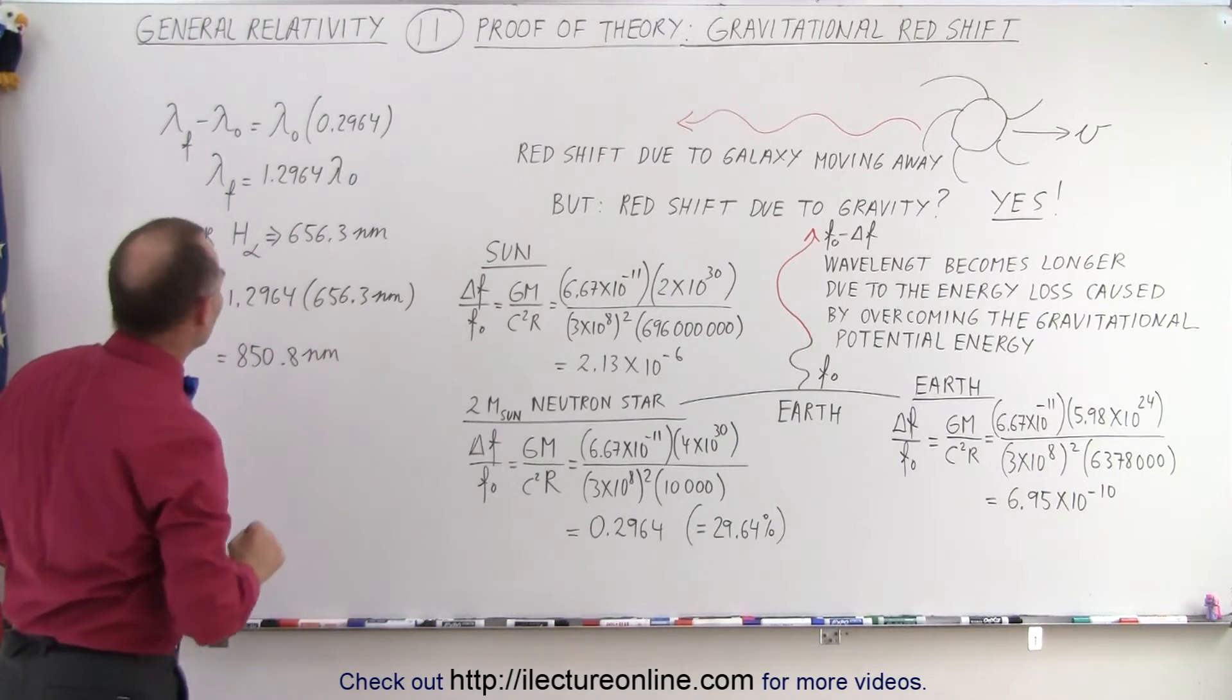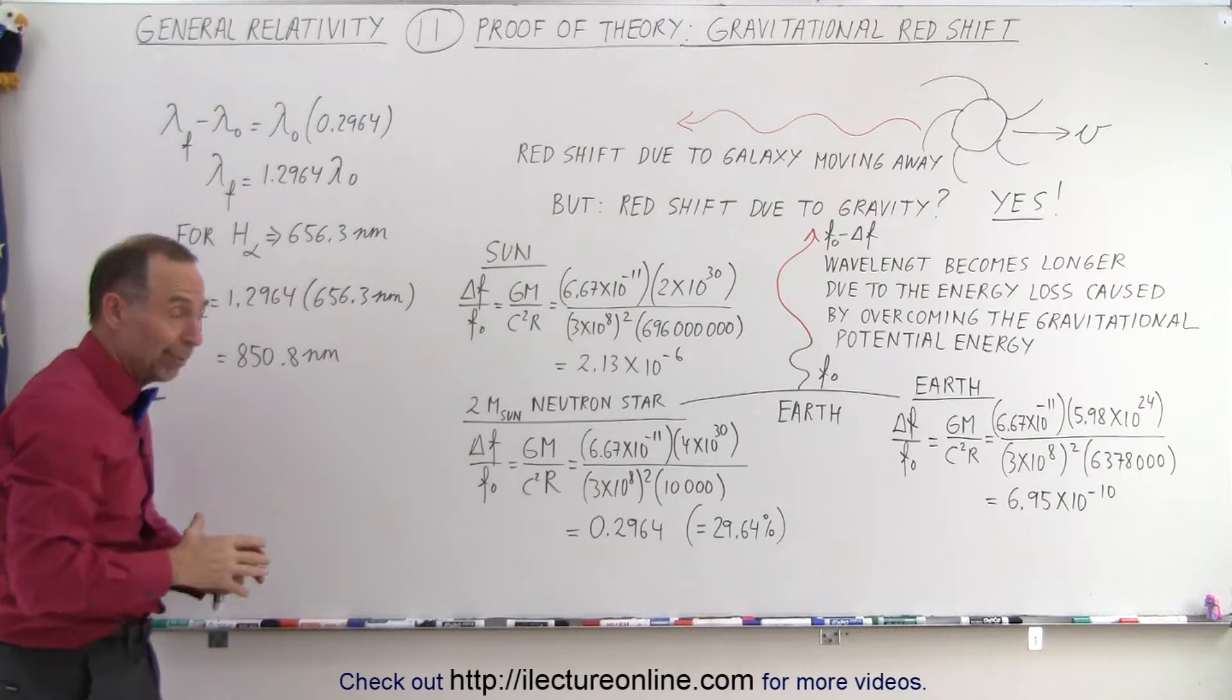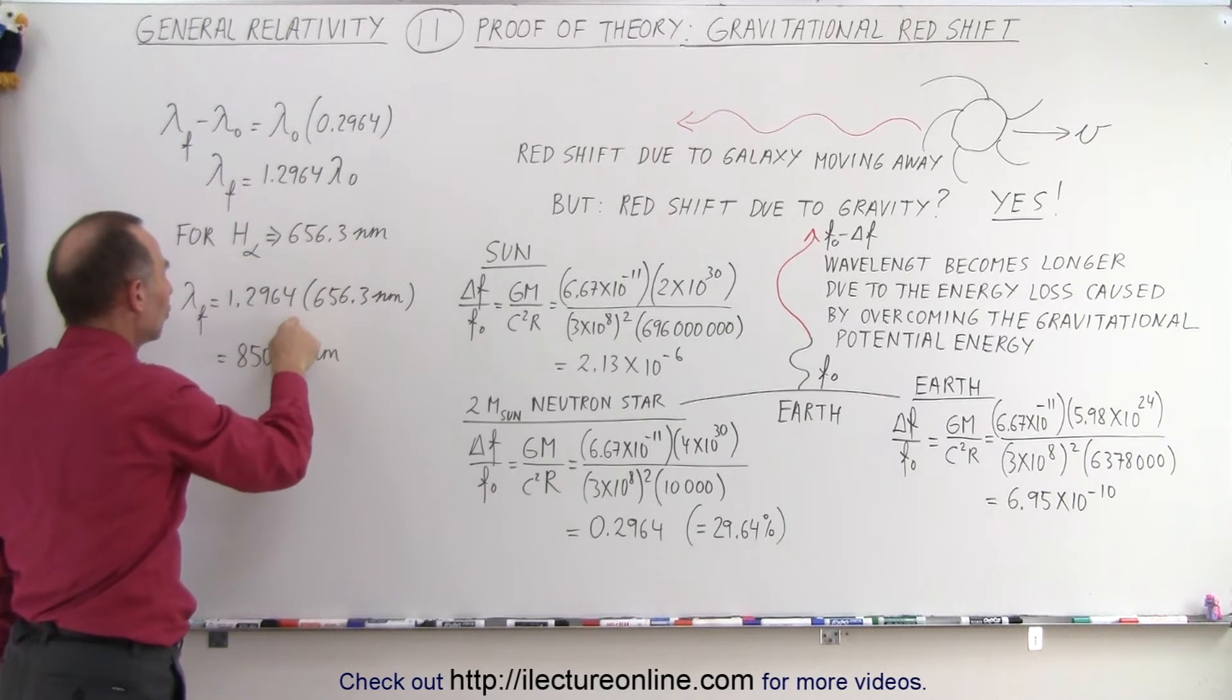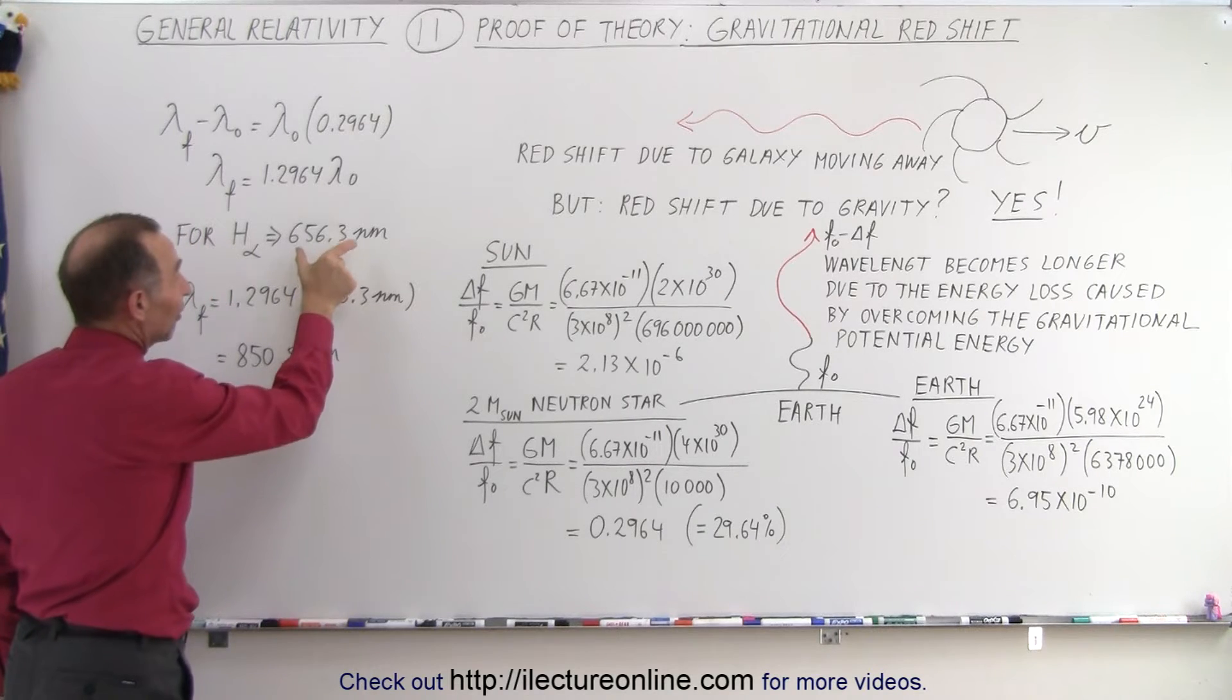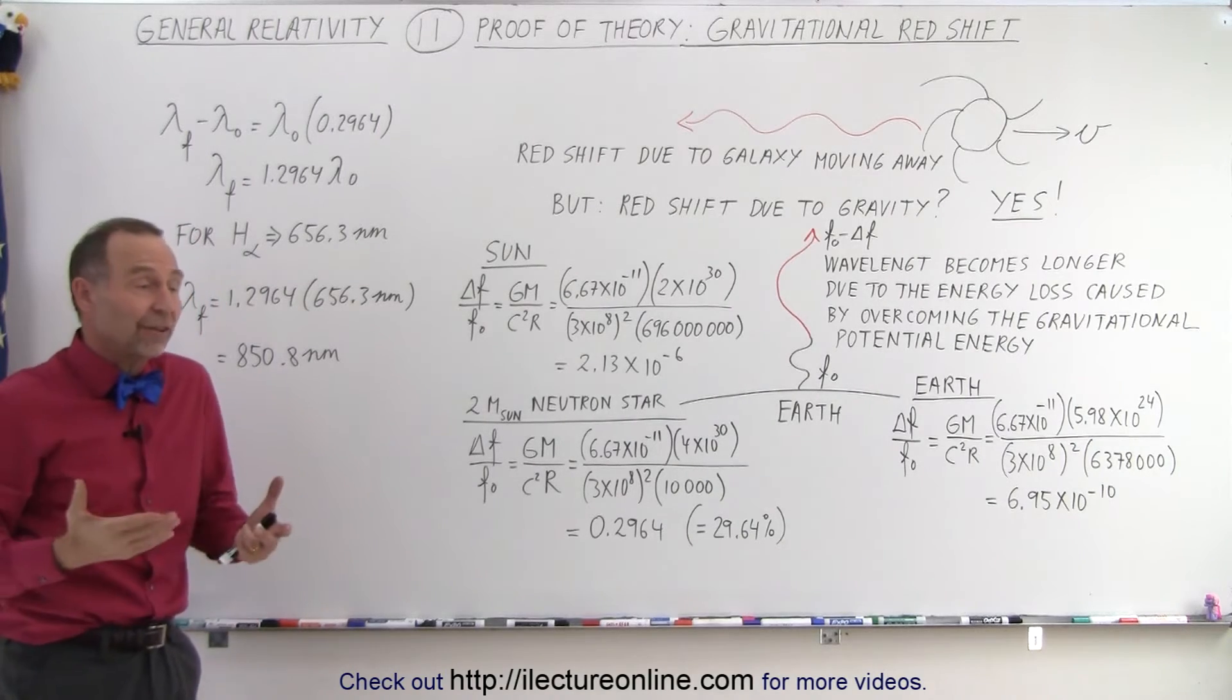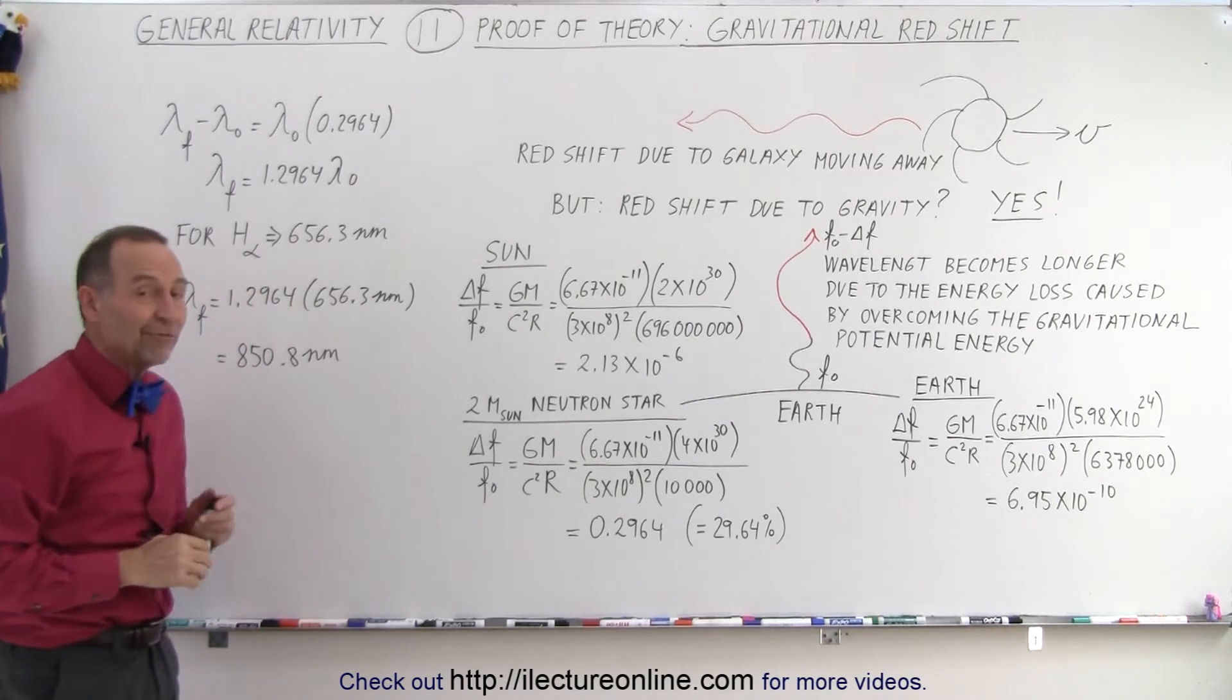The wavelength will be stretched by almost 30%. For the H-alpha line, that very familiar red light from hydrogen, from the hydrogen atom, which after all is the most common element in the universe, being at 656.3 nanometers, it would be stretched to 850.8 nanometers. So it would be stretched from the visible light into the invisible infrared light. We couldn't even see it anymore. So the H-alpha line, if it's emitted from a neutron star, would be shifted so much that it's no longer visible light, it now would be infrared light.